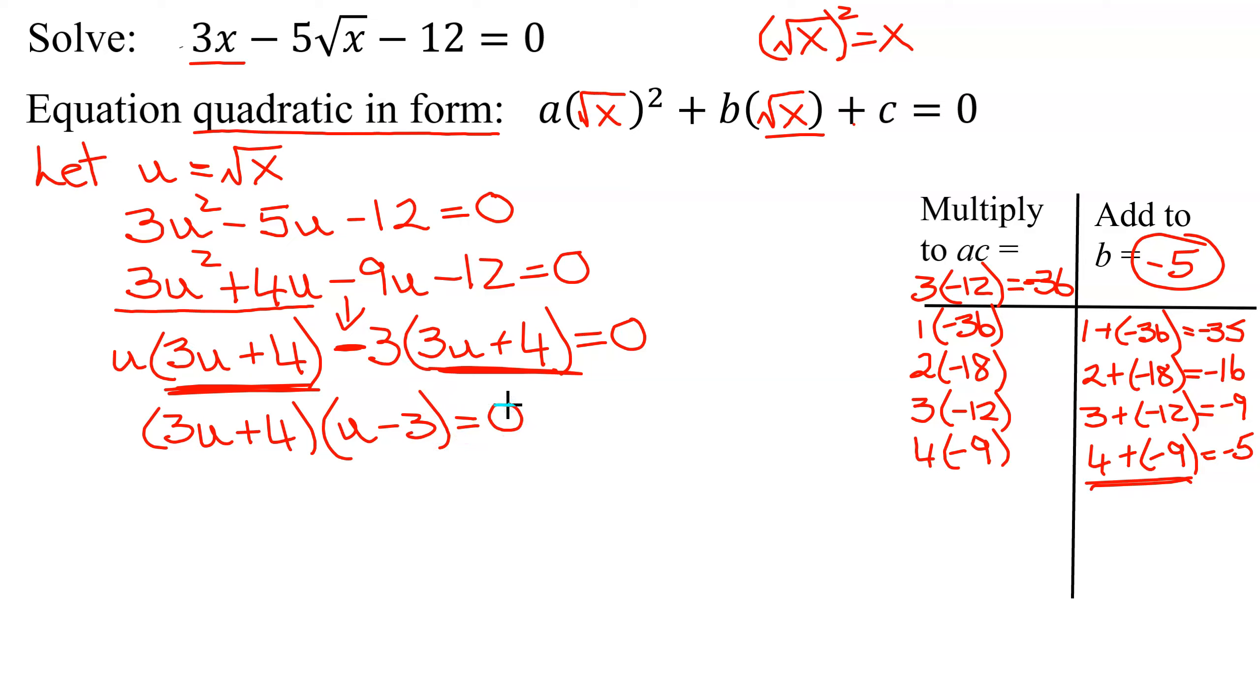So now we've factored our quadratic equation. Two factors multiplied together equals 0. Set each of them equal to 0. So 3u plus 4 equals 0, and u minus 3 equals 0.